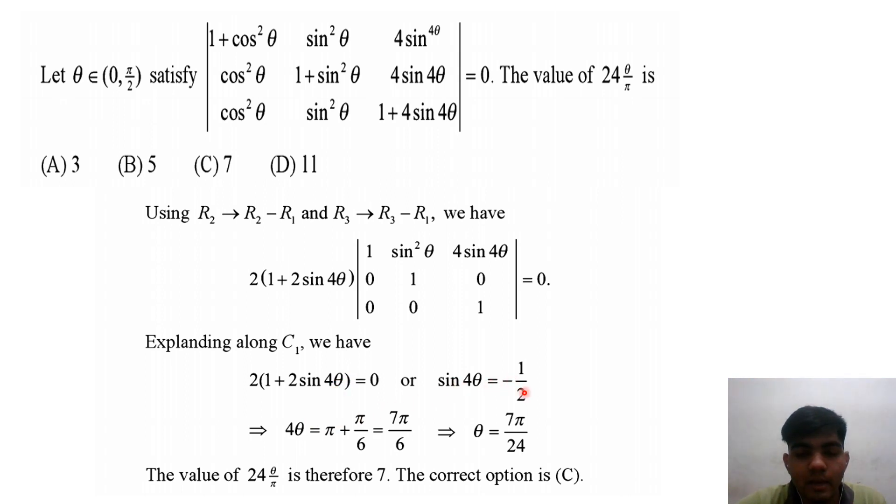Since sin4θ = -1/2 and sine is negative in the third quadrant, we have 4θ = π + π/6 = 7π/6. Dividing by 4, θ = 7π/24.